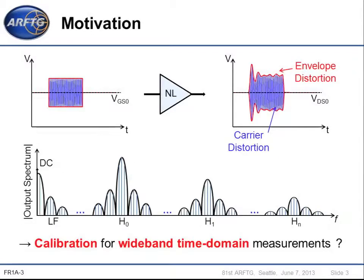Nonlinear devices used in communication and radar systems produce envelope distortion and carrier distortion. These distortions come globally from nonlinearity and memory effects in nonlinear devices. These nonlinear devices, excited by modulated and wideband or pulse signals, produce complex spectral components including DC, low frequency, and multiple harmonics. So to accurately characterize nonlinear devices, a time domain calibrated measurement system should be able to retrieve all the information over the bandwidth. The problematic of time domain measurement systems is the calibration for wideband time domain measurements.